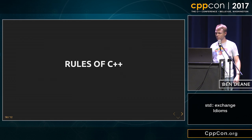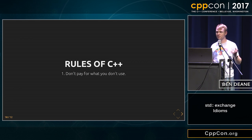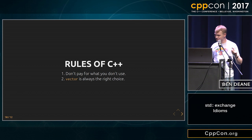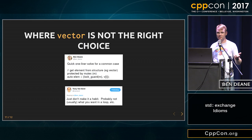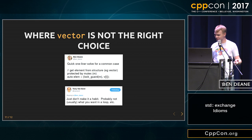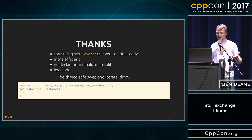What are the rules of C++? Number one: don't pay for what you don't use. Number two: vector is always the right choice — except in this case, as I discovered, because vector implies iteration, and therefore it was the wrong choice for this example, because you don't actually want to lock in a loop. But as a pattern, as a refactoring, this thread-safe swap-and-iterate idiom — you should start using it. It's more efficient. Exchange is better than swap. You save a move. You don't get the declaration-initialization split. It's less code. It's an idiom.